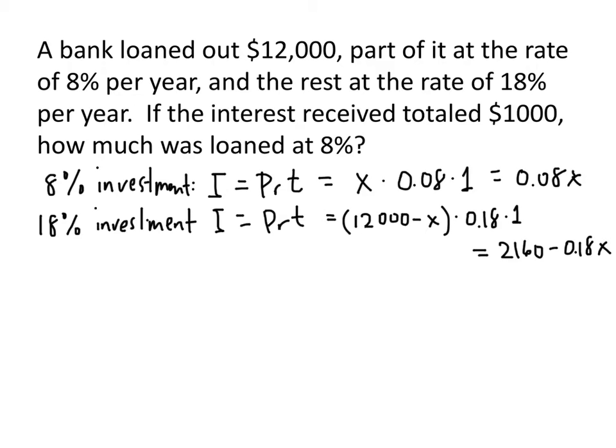Now we add that together. Our total interest was $1,000, and that's the sum of these two quantities: .08x plus 2160 minus .18x.